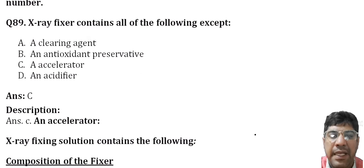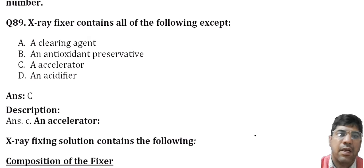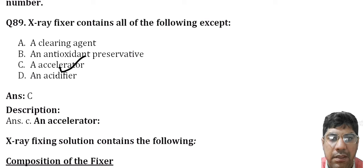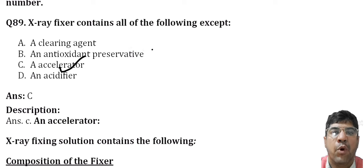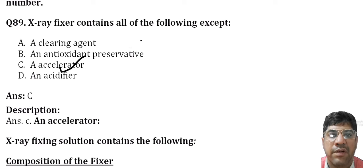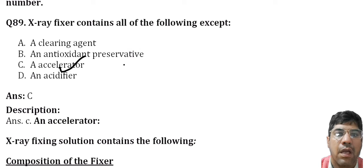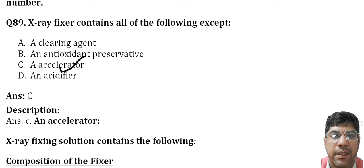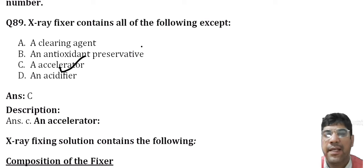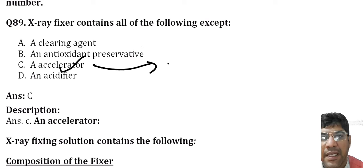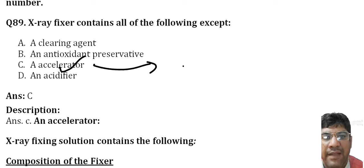The X-ray fixer contains all of the following except an accelerator. The fixing agent is ammonium thiosulfate or sodium thiosulfate; preservative is sodium sulfite; hardening agent is potassium alum; acidifier is sulfuric acid. An accelerator is not found in the X-ray fixer — it has a clearing agent, antioxidant, and acidifier.